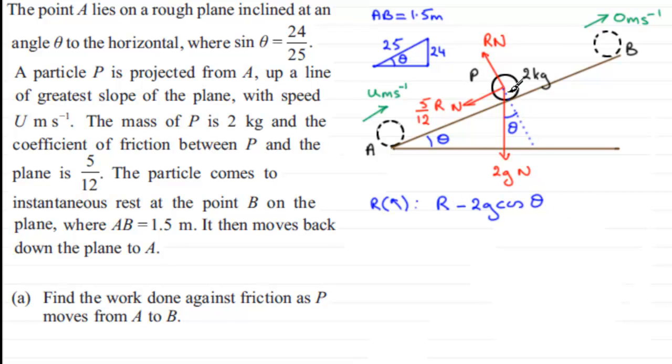and because it's in equilibrium relative to the plane in this sense, it equals zero. So if we add 2g cos theta to both sides, we therefore have that that reaction is 2g cos theta.